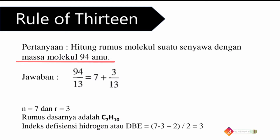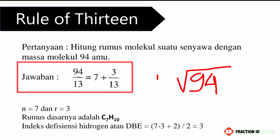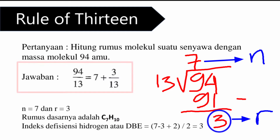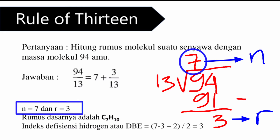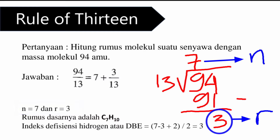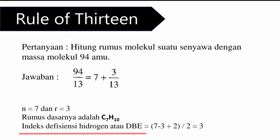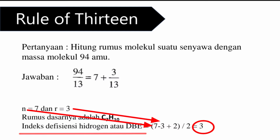Misalnya ada pertanyaan: hitung rumus molekul suatu senyawa dengan massa molekul 94 AMU. Jawabannya: 94 dibagi 13 hasilnya 7, sisa hasil baginya adalah 3. Nilai 7 kita simpulkan sebagai N, dan sisanya 3 sebagai R. Jadi C-nya adalah C7, dan H-nya adalah N ditambah R atau 7 ditambah 3 sama dengan 10, sehingga rumus dasarnya C7H10. Lalu kita hitung DBE-nya: N dikurang R ditambah 2 dibagi 2, yaitu 7 kurang 3 ditambah 2 dibagi 2, hasilnya sama dengan 3. Jadi senyawa dengan massa molekul 94 memiliki 3 ikatan rangkap atau 3 ketidakjenuhan.